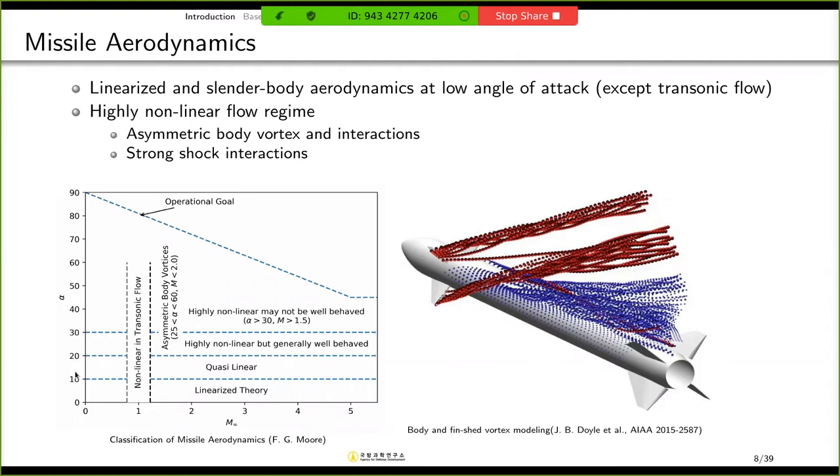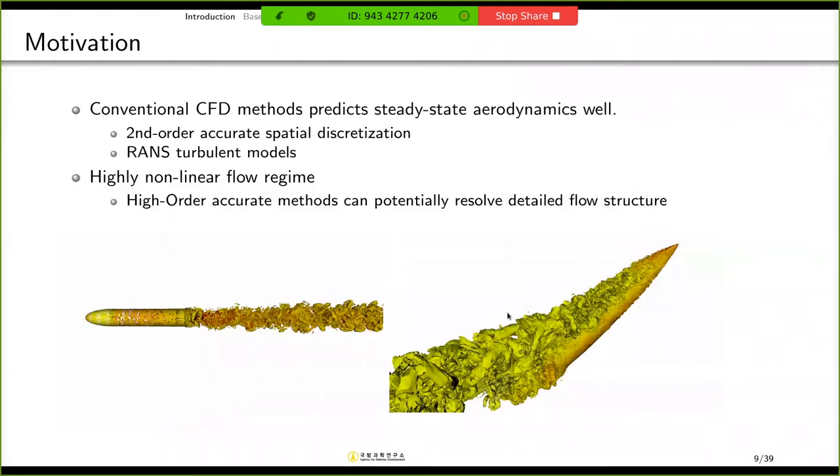So when angle of attack is greater than 10 or 20 degrees, flow becomes nonlinear. So we use conventional CFD method in these regions. But if the angle of attack is bigger than 25 or 30 degrees, it's not easy to predict aerodynamics using conventional CFD method. So one of them is asymmetric body vortex, which occurs when the angle of attack is more than 25 degrees and Mach number is less than 2 in subsonic region. And the other thing is that when Mach number is higher than 1.5, we can see some strong bow shock and its interaction with the body or shedding vortex and it's quite complicated. So this is the motivation of my study.